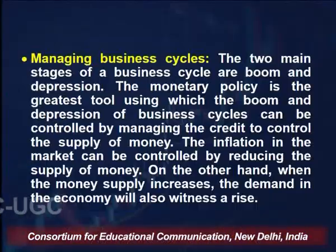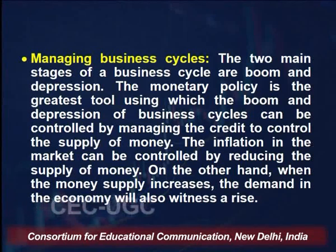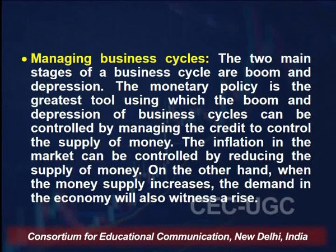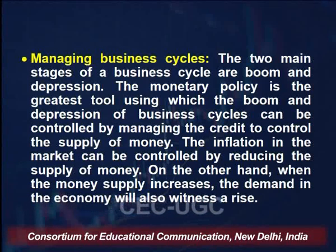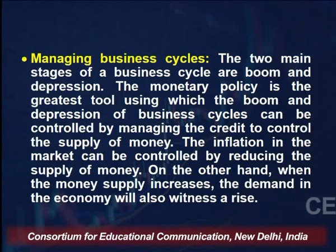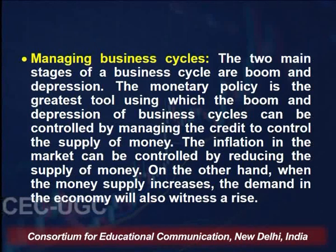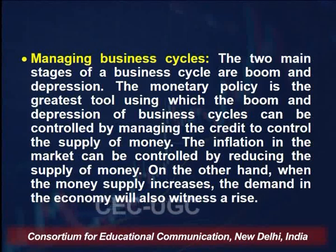The next objective is managing business cycles. The two main stages of business cycles are boom and depression. Monetary policy is the greatest tool using which boom and depression in the business cycle can be controlled by managing credit to control the supply of money. Inflation in the market can be controlled by reducing the supply of money, and when money supply increases, demand in the economy will also witness a rise.